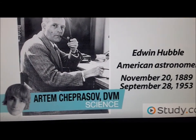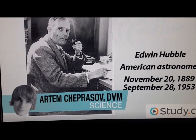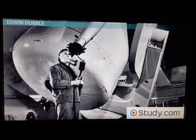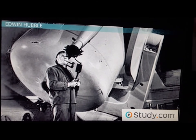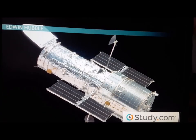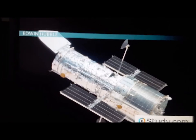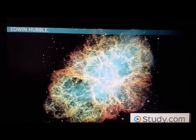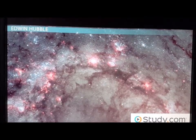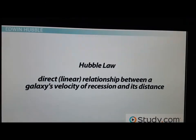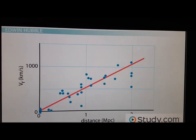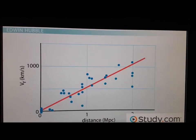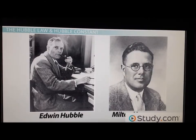Edwin Hubble was a famed American astronomer of the 20th century. He contributed so much that all sorts of things are named after him — you've likely heard of the most famous one, the Hubble Space Telescope. Although it was launched many years after Hubble's death, the telescope, like its namesake, led to many breakthroughs in understanding our universe. Another thing named after Hubble is the Hubble law and Hubble constant, the subject of our discussion.